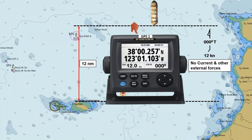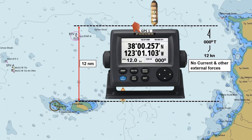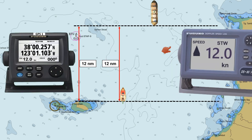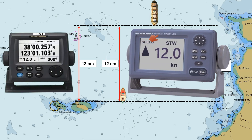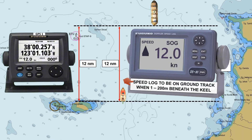We use our GPS receiver to determine the ship's speed over the ground, while the Doppler log measures speed through the water. However, the Doppler log can provide more accurate data for speed over the ground when the water depth is between 1 to 200 meters.